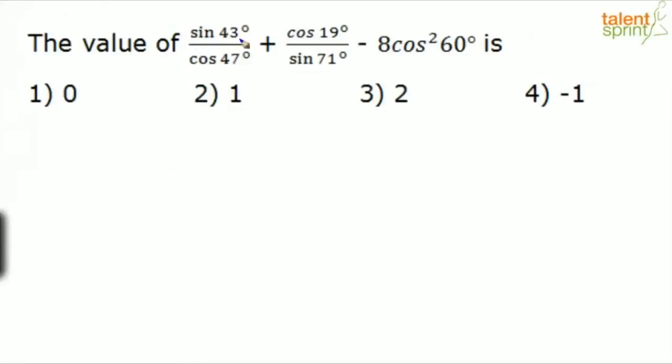The value of sine 43 degrees divided by cos 47 degrees plus cos 19 degrees divided by sine 71 degrees minus 8 cos squared 60 degrees is. You have to find out what the result here would be. Now, you know that we are not expected to know these values by heart. So it is obvious that some conversion here can be done to simplify this.